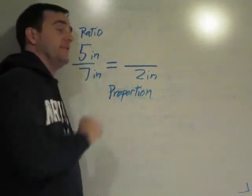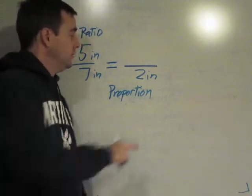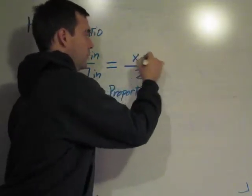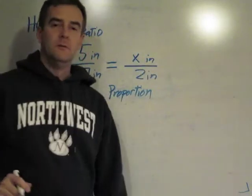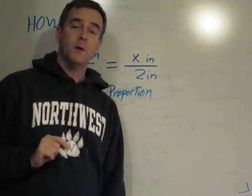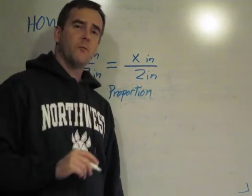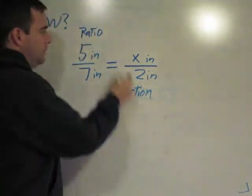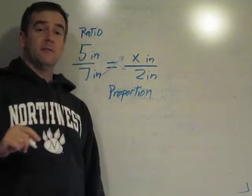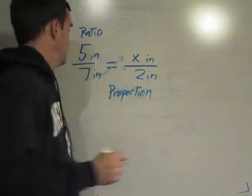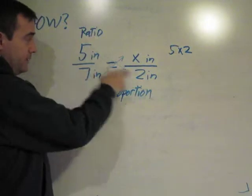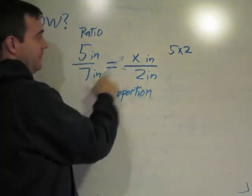Seven inches wide by five inches tall for the original photo. Two inches wide by what? Well, when we don't know what something is, we use a variable. How do we find out what this variable is? The cross-products property, or cross-multiplying is what we call it. And you've seen it before. You've practiced it in Algebra 1 a hundred times. We can multiply across, and whatever we get across is equal to each other. Five times two equals seven times x.